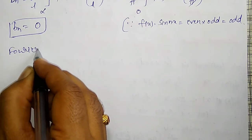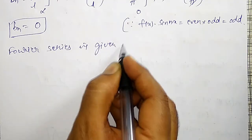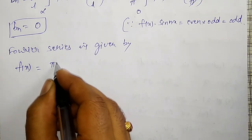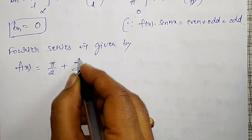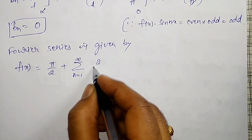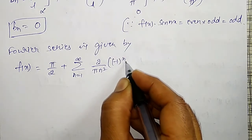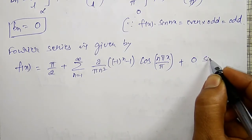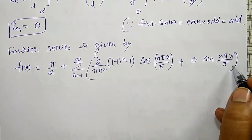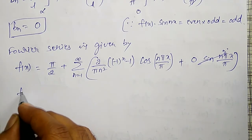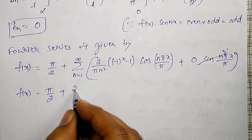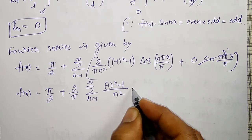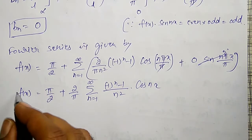The Fourier series is now: f(x) = π/2 + summation n=1 to infinity of aₙ cos(nx), where aₙ = (2/πn²)((-1)ⁿ − 1), and the bₙ sin term vanishes since bₙ = 0. Therefore, f(x) = π/2 + (2/π) × summation n=1 to infinity of ((-1)ⁿ − 1)/n² × cos(nx). This is the required Fourier series.